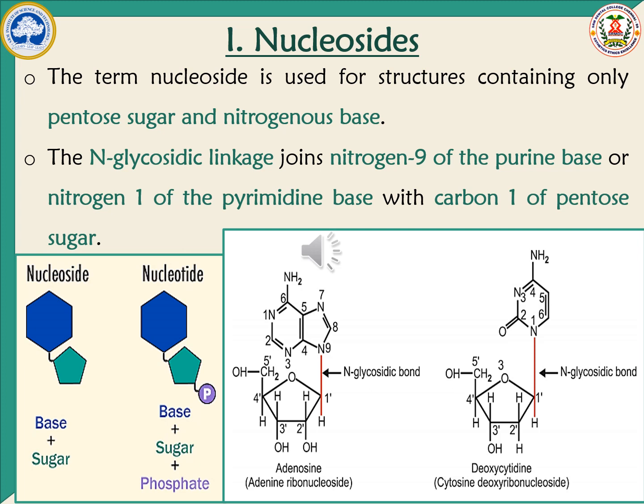First we will discuss nucleosides. The DNA structure consists of nucleotides, but a nucleoside is a structure consisting of a pentose sugar and a nitrogenous base. The pentose sugar is of two types: deoxyribose and ribose. Nitrogenous bases include purines and pyrimidines. The pentose sugar and nitrogenous base are linked by an N-glycosidic linkage.